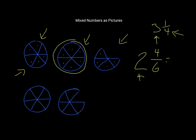Now, you also have to remember that you can always reduce — you need to always simplify your fractions. So this is going to be the same as 2 and 2 thirds. Your final answer should be 2 and 2 thirds.